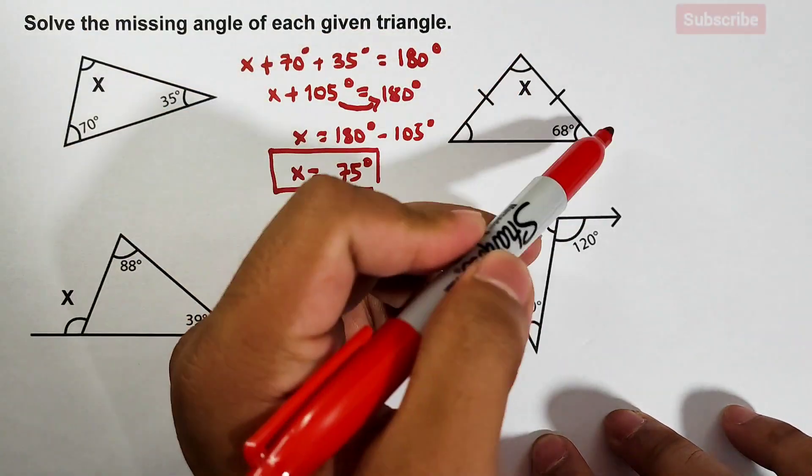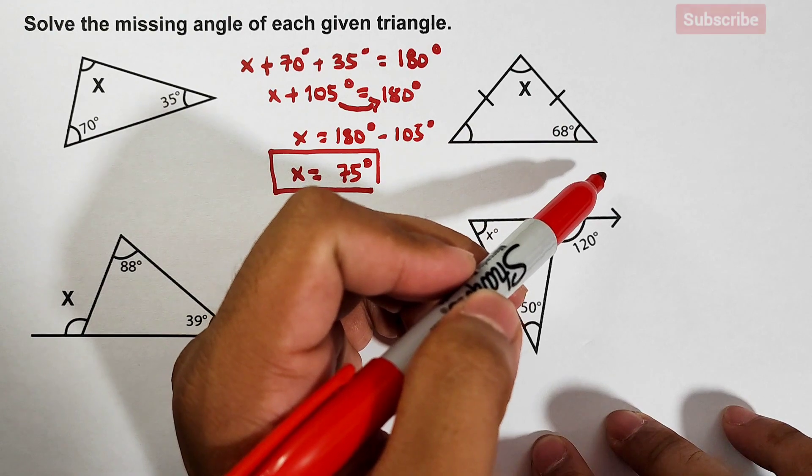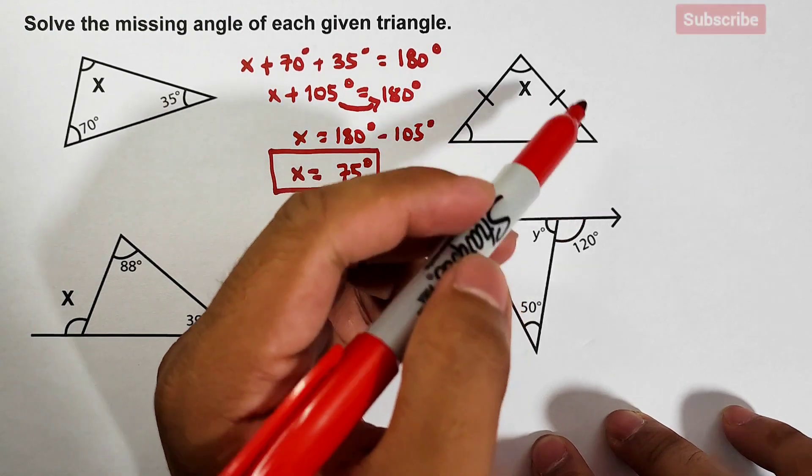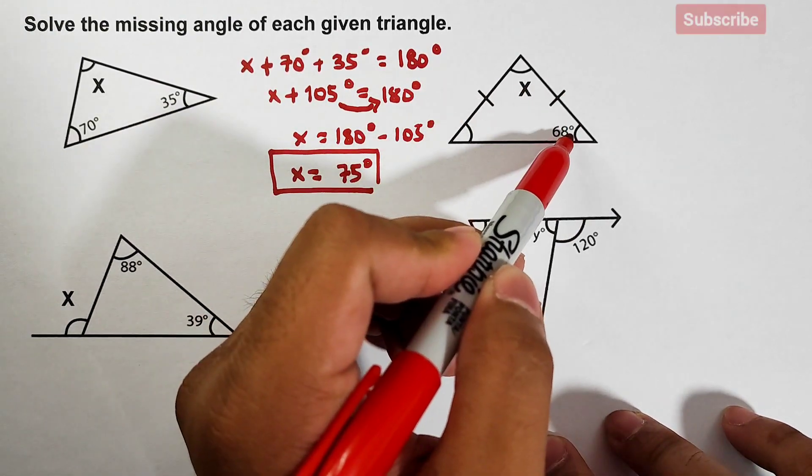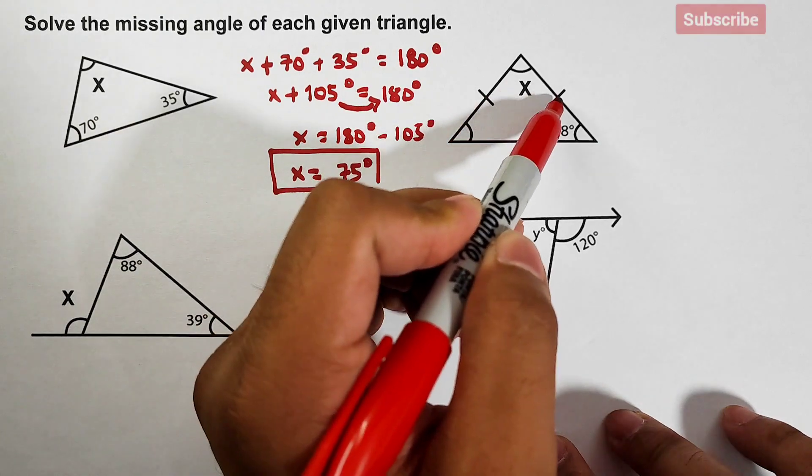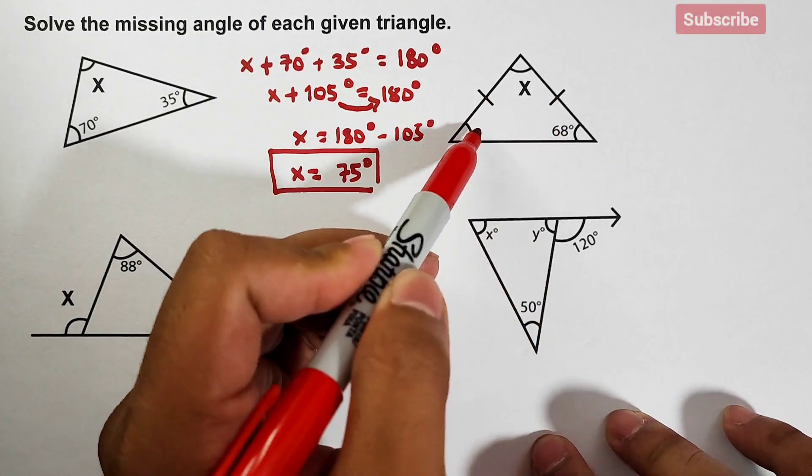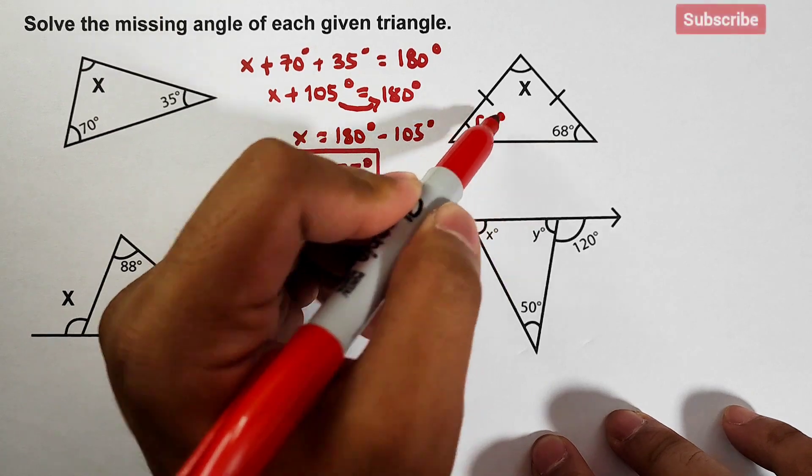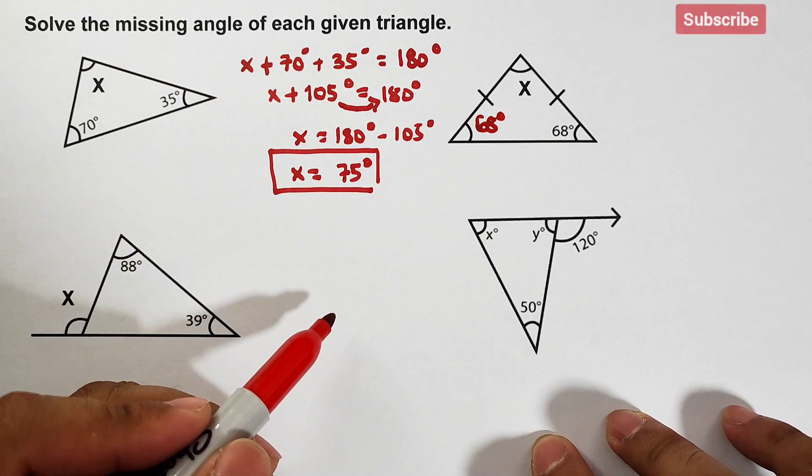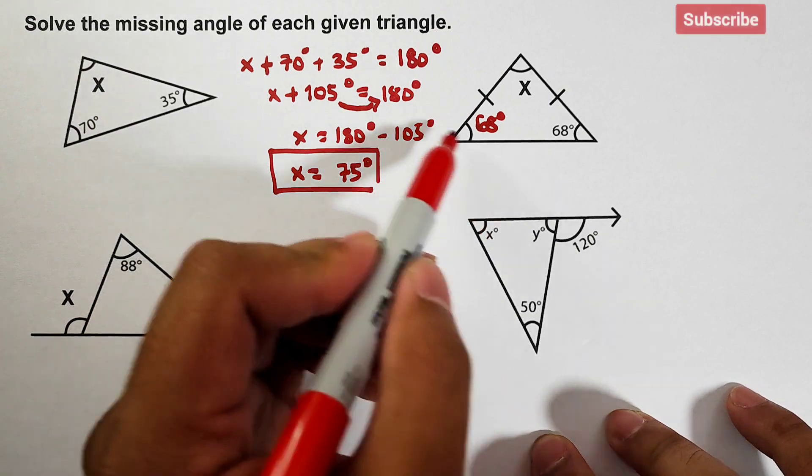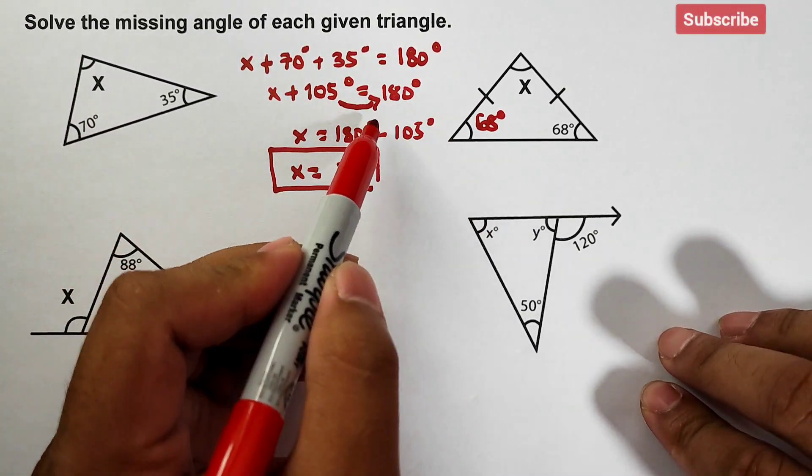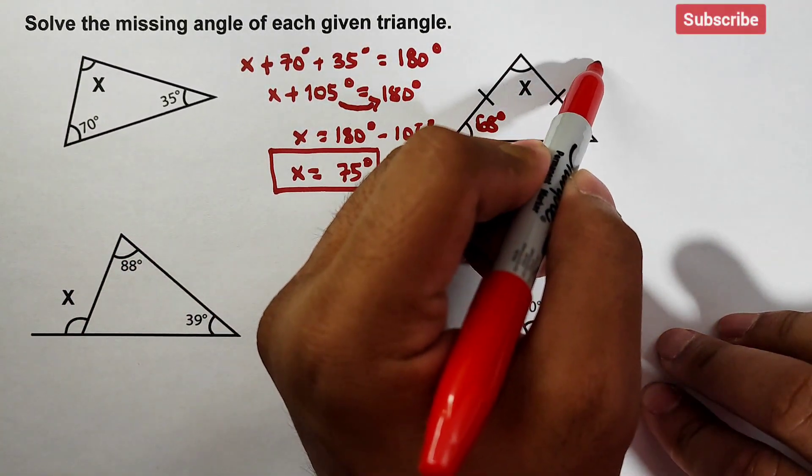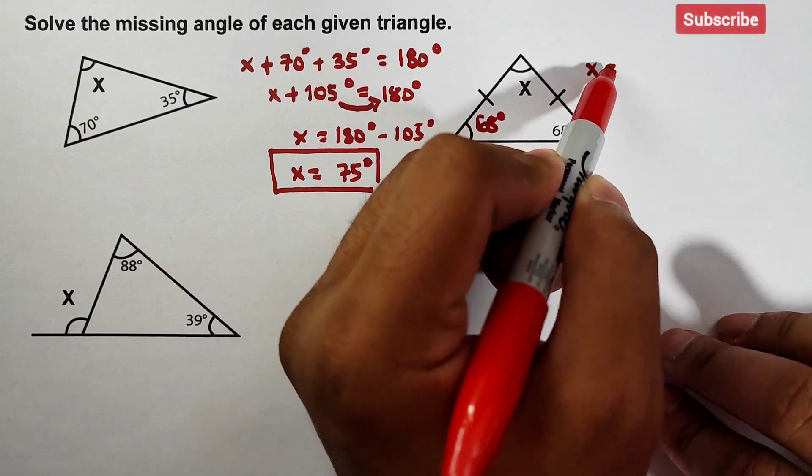If this side and this side are congruent, meaning its opposite angles are also congruent. This angle is opposite to this one, this side is opposite to this angle, meaning this one is also 68 degrees. Okay, so what we need here is to solve for the variable x.